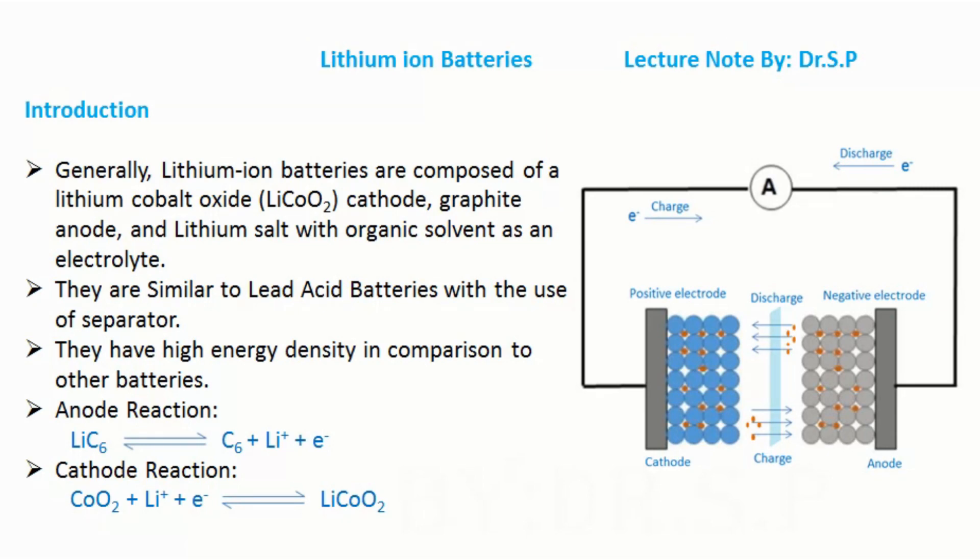Similarly, if we switch off whatever the battery is powering, the flow of electrons stops and so does the flow of ions.